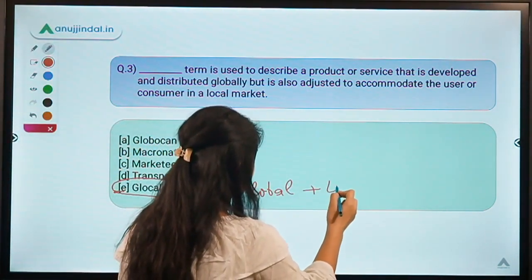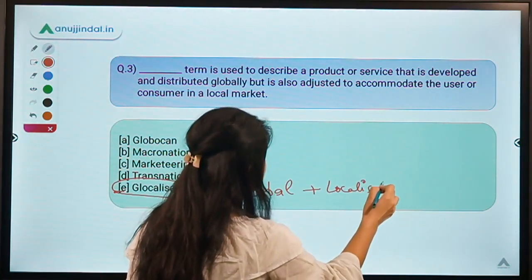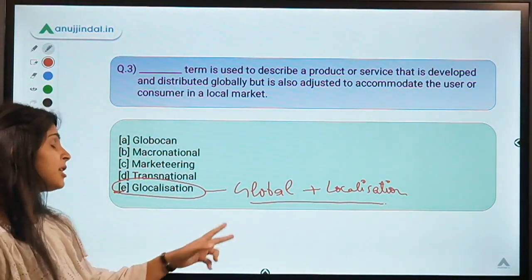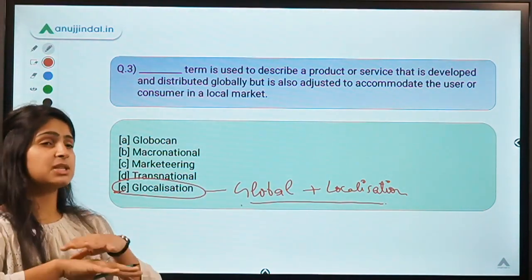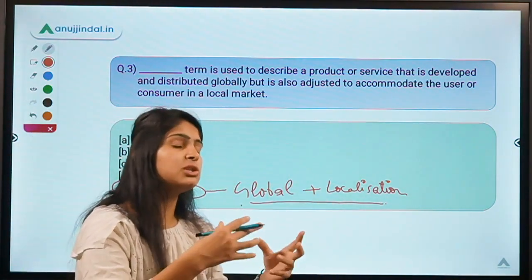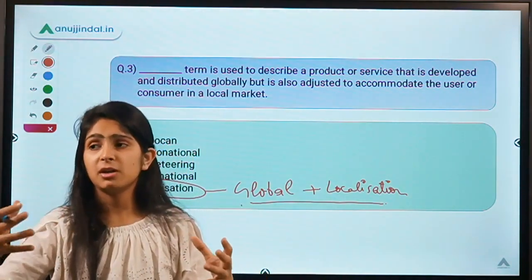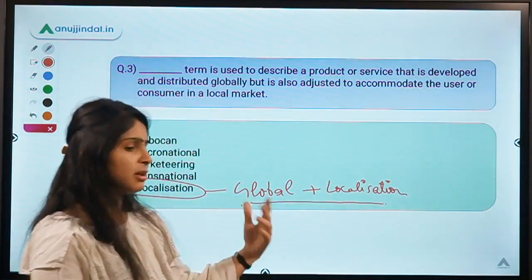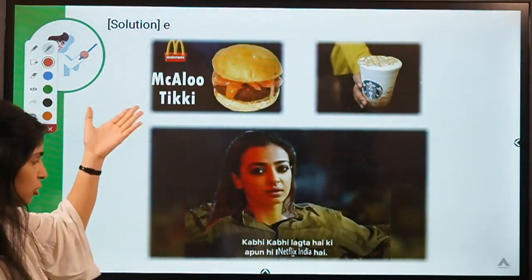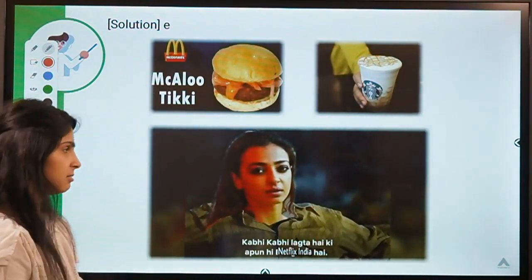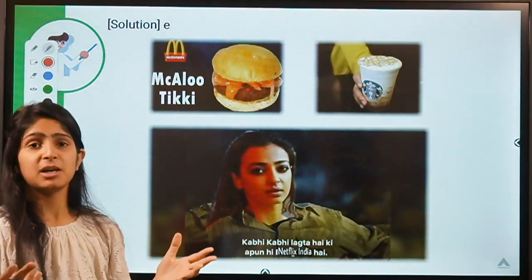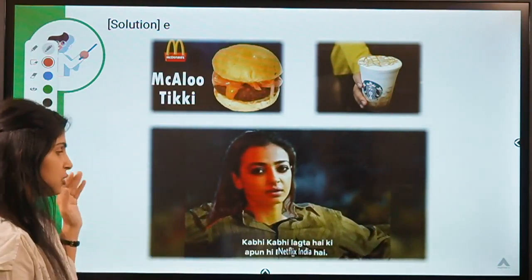Glocalization, although not a very recent trend, has been in news and in talks for several years. It comprises two terms: global plus localization. We use this term when a company operates on a global level or has presence in multiple countries, but also localizes its products or services in relation to the needs of customers in that particular country. It would be better to discuss examples to give you a better idea.